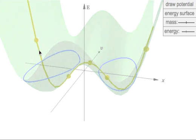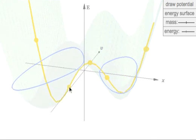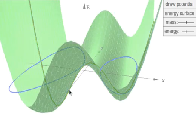We can edit the potential, say by moving the second control point, and see how the energy surface and the trajectories change in response.